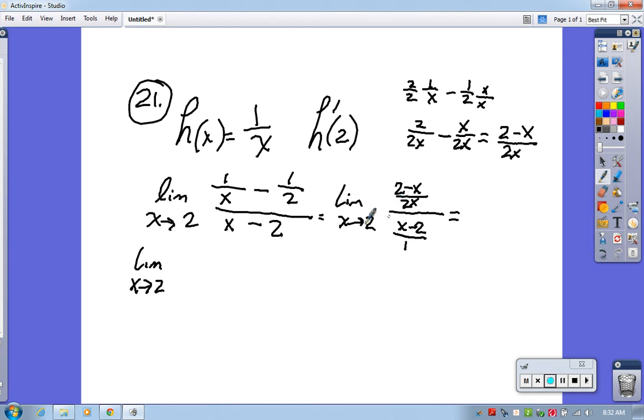It's this divided by that, which is the same as (2 - x)/2x times the reciprocal of that, 1/(x - 2). So that's the same as (2 - x) times 1 over 2x times (x - 2).